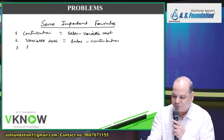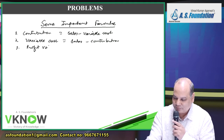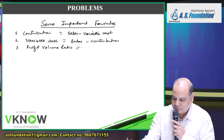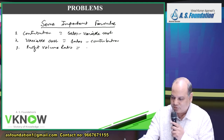The next formula is the Profit Volume Ratio (PV Ratio). PV Ratio equals contribution divided by sales, multiplied by 100.